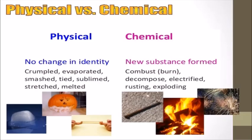Now let us learn about physical and chemical changes. In a physical change, the material may change its shape or form, but no new compounds are formed. Physical changes are generally reversible. In a chemical change, a new substance with new and different properties is produced, and the change cannot be reversed by reversing the conditions.